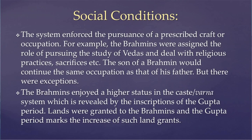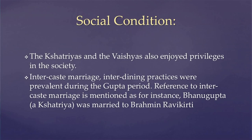However, there are references to certain exceptions. The Brahmins in Gupta society earned immense honor and respect, revealed by inscriptions mentioning large numbers of land grants and Agrahara lands donated to them. The Gupta period marks an increase of such land grants. The Kshatriyas and Vaishyas also enjoyed privileges. Despite disabilities within the caste system, inter-caste marriage and inter-dining were prevalent, as records show — for instance, Bhanu Gupta, a Kshatriya, was married to Brahmin Ravi Kirti.